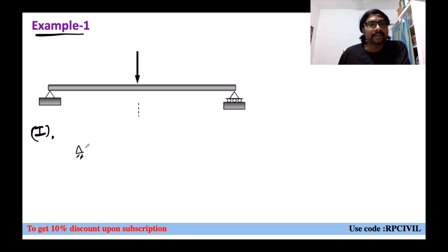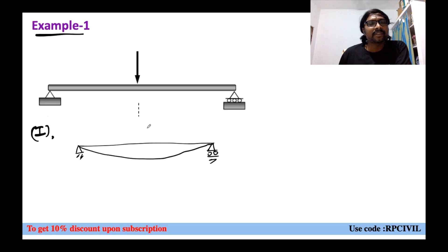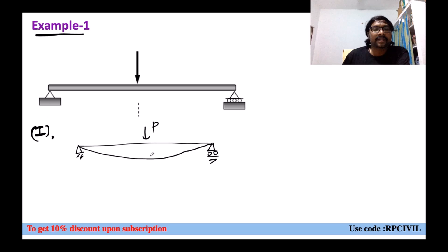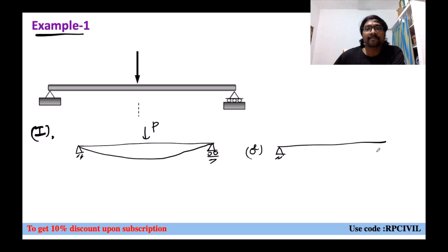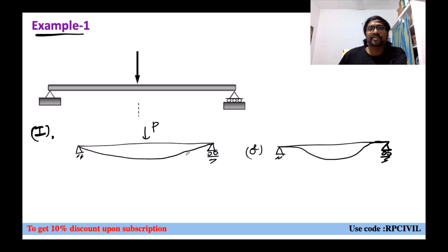There are two possibilities. This is one possibility. Because load is acting in the vertically downward direction, the deflections will also be in the vertically downward direction, and deflections will always be perpendicular to the longitudinal axis of the members. You can also draw it a second way. How can you check whether the first one or second one is correct? We have to check by means of compatibility conditions.